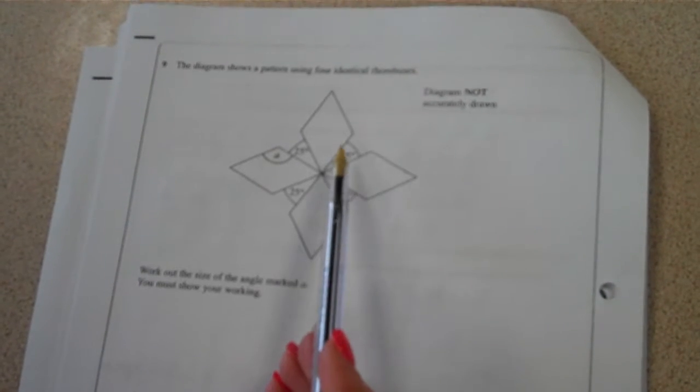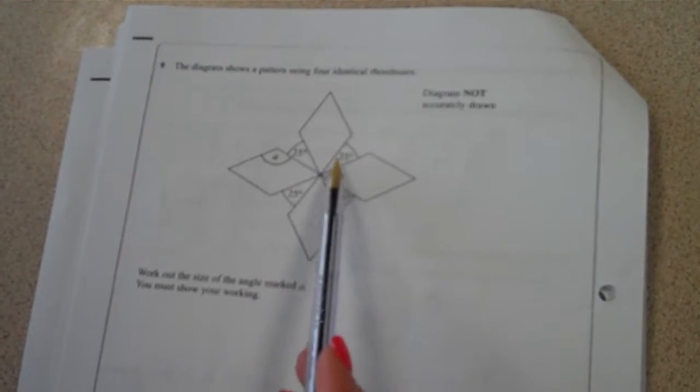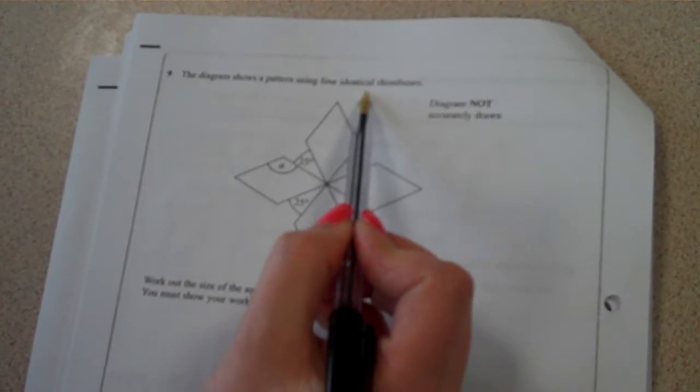So if I know that these are all 25 degrees and I know that the whole lot is equal to 360 degrees, and it says in the question here that they are identical rhombuses, I know that these four are going to be the same.